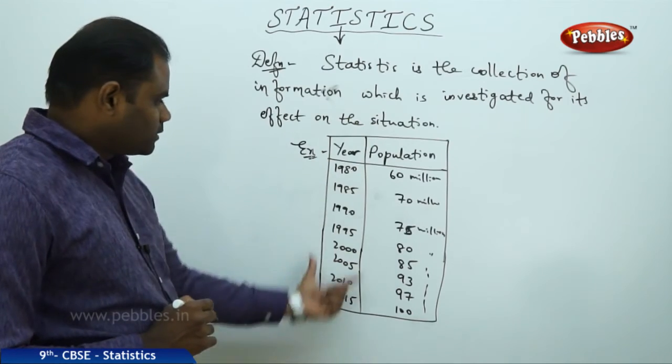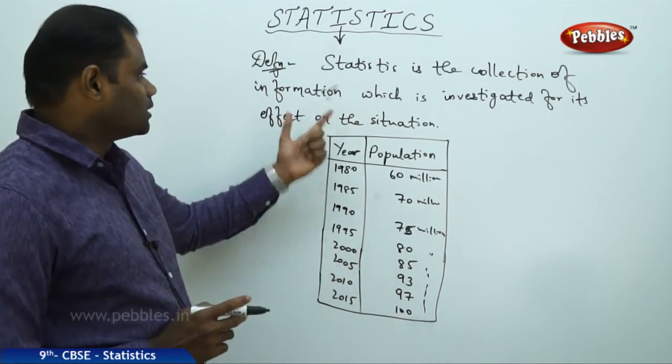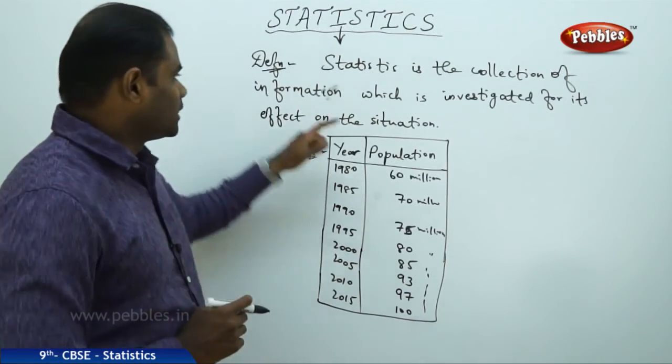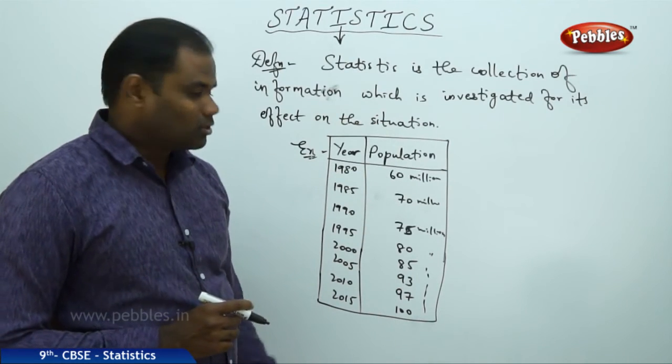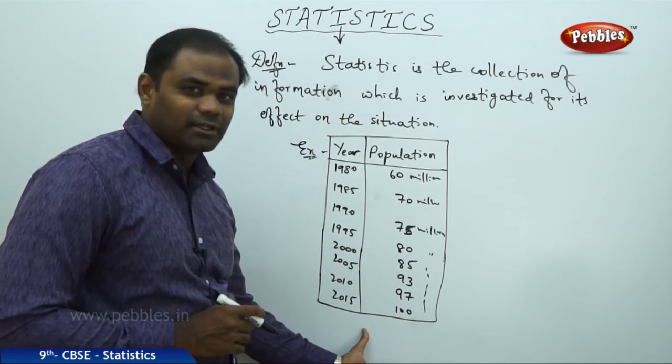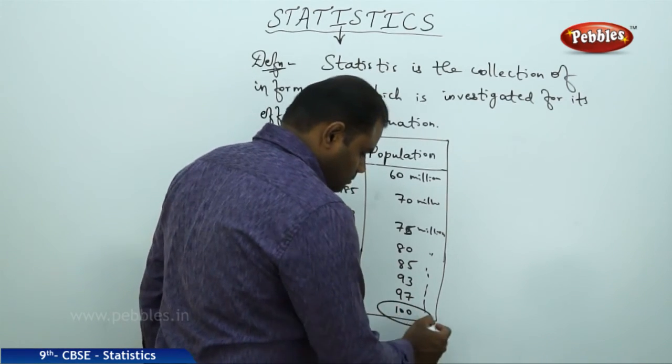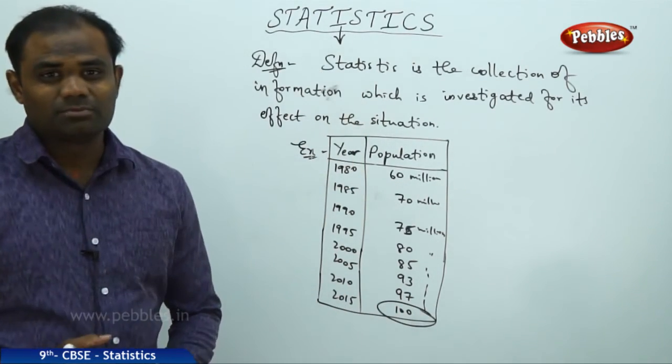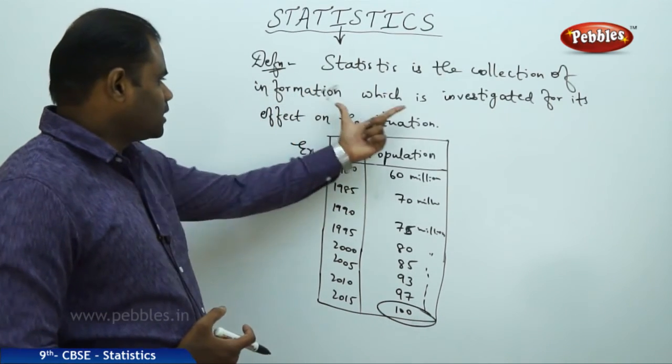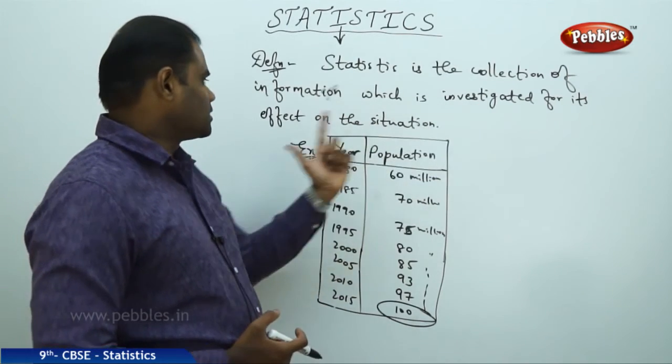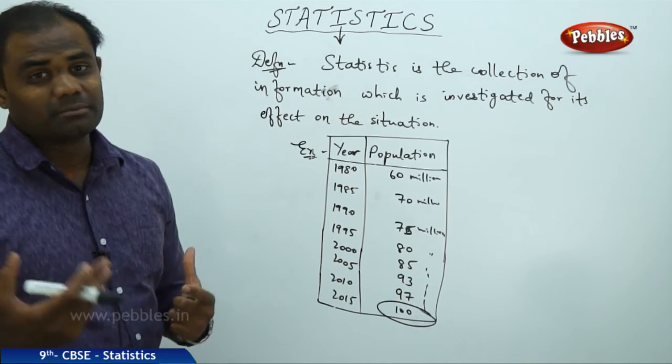The year calculated with population every five years gives me the collection of information which is being investigated. Because the population is increasing every five years, as seen from this table, I take precautionary measures because 100 million seems to be a very big population. Therefore, statistics, which is the collection of information, is investigated for its effect on the situation, and then precautionary measures are taken.